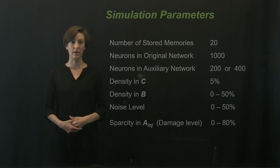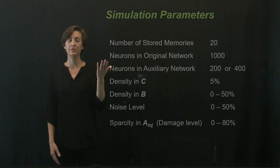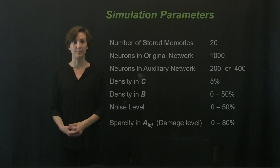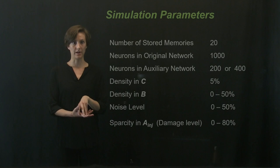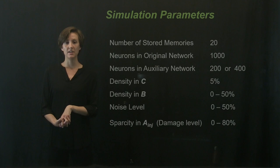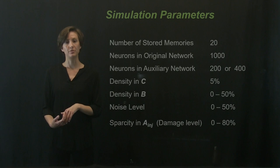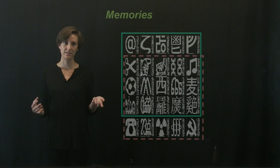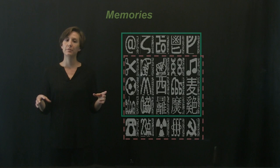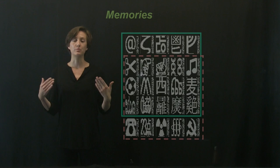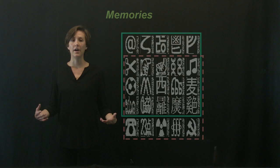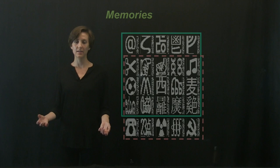Here are the simulation parameters that we used. We stored 20 memories in the network. The original network size is 1,000 neurons, while the auxiliary network had two sizes: a 200-neuron network and a 400-neuron network. The density in C is 5%. We varied the density in B from 0 to 50%, as well as the noise level from 0 to 50%, and the damage level from 0 to 80%. We used two sets of memories. The memories in the green box are the optimal memories — these memories are very orthogonal to each other, and the network is able to retrieve these memories 100% of the time when it's not damaged. The memories in the pink box, however, are not as orthogonal to each other, and the network is not able to retrieve these memories always, even when it's healthy.